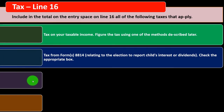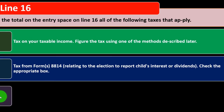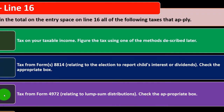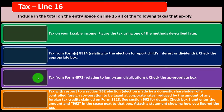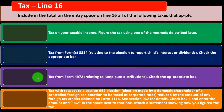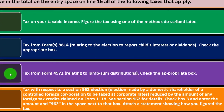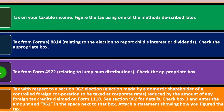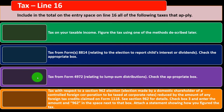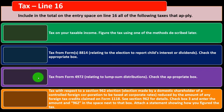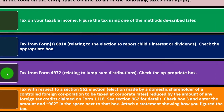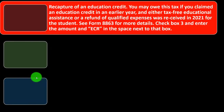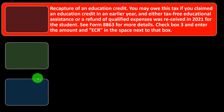Then we have tax from Form 8814, related to the election to report a child's interest or dividends. We have tax from Form 4972 relating to lump sum distributions, and then tax with respect to a Section 962 election — made by a domestic shareholder of a controlled foreign corporation to be taxed at corporate rates, reduced by any foreign tax credits claimed on Form 1118. Check box three and enter the amount and '962' in the space next to the box.